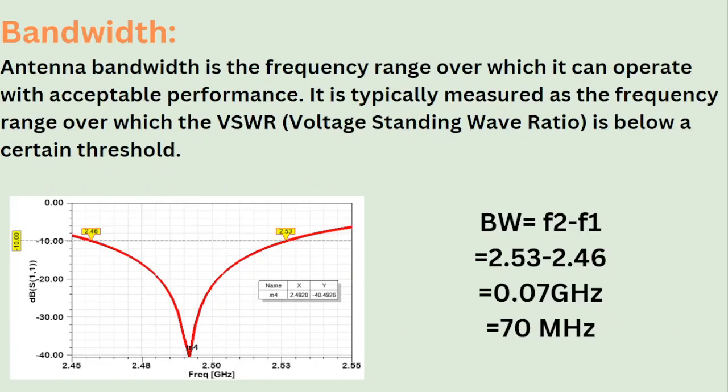Bandwidth is the frequency range over which it can operate with acceptable performance. It is typically measured as the frequency range over which the VSWR is below a certain threshold.